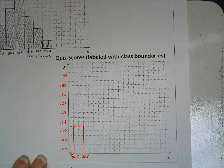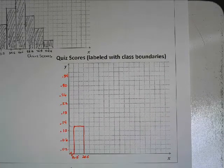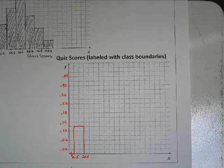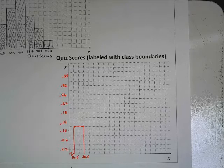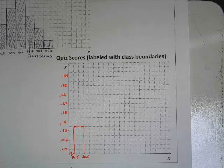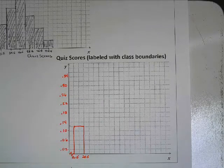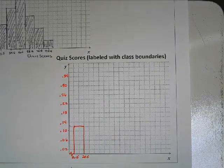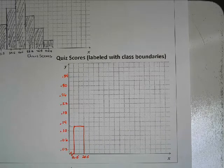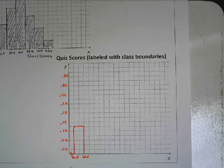So my first category, my first class, has class boundaries of 16.5 to 28.5, which is why I put the little break there so that it's not like I actually, I didn't start at 0, I took out that piece of the graph and started at 16.5 and it has a relative frequency of 0.13.